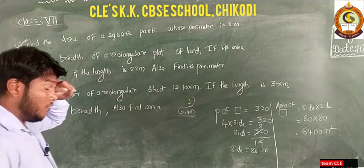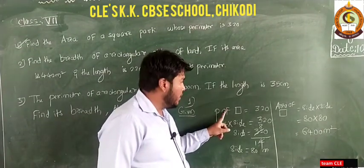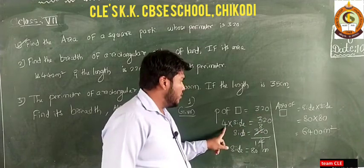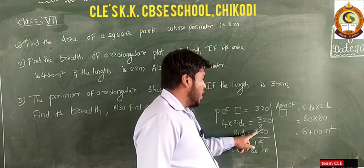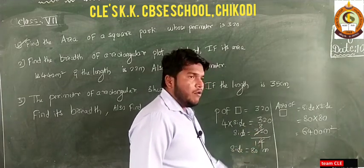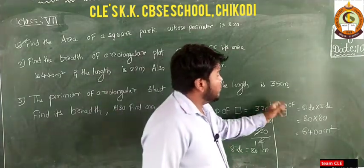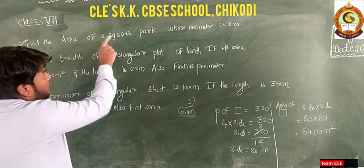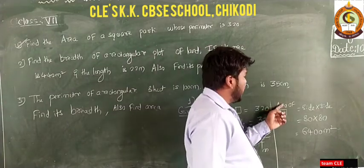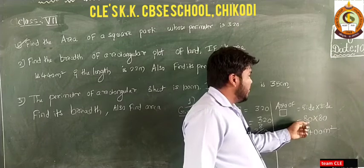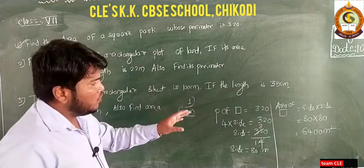To summarize question one: first calculate the side using the perimeter formula — perimeter of square equals four into side equals 320, so side equals 320 divided by 4, which is 80 meters. Then use the area formula: area of square equals side into side equals 80 into 80 equals 6400 meter square. Pause the video to note down.